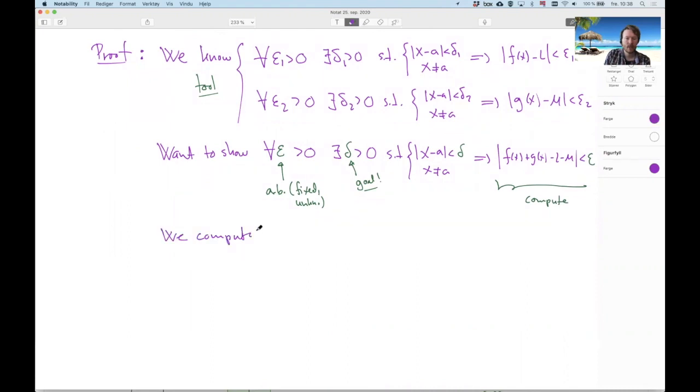So let's go down here so we can compute. We start to look at this expression, f of x plus g of x minus L minus M. Now let's just connect L to f and M to g, because they're guys that kind of belong together. So I'm getting here f of x minus L plus g of x minus M. Now I can put parentheses like this, and then I can use the triangle inequality. So then I'm getting f of x minus L in absolute value alone and g of x minus M in absolute value alone. So suddenly this expression pops up and this expression pops up.